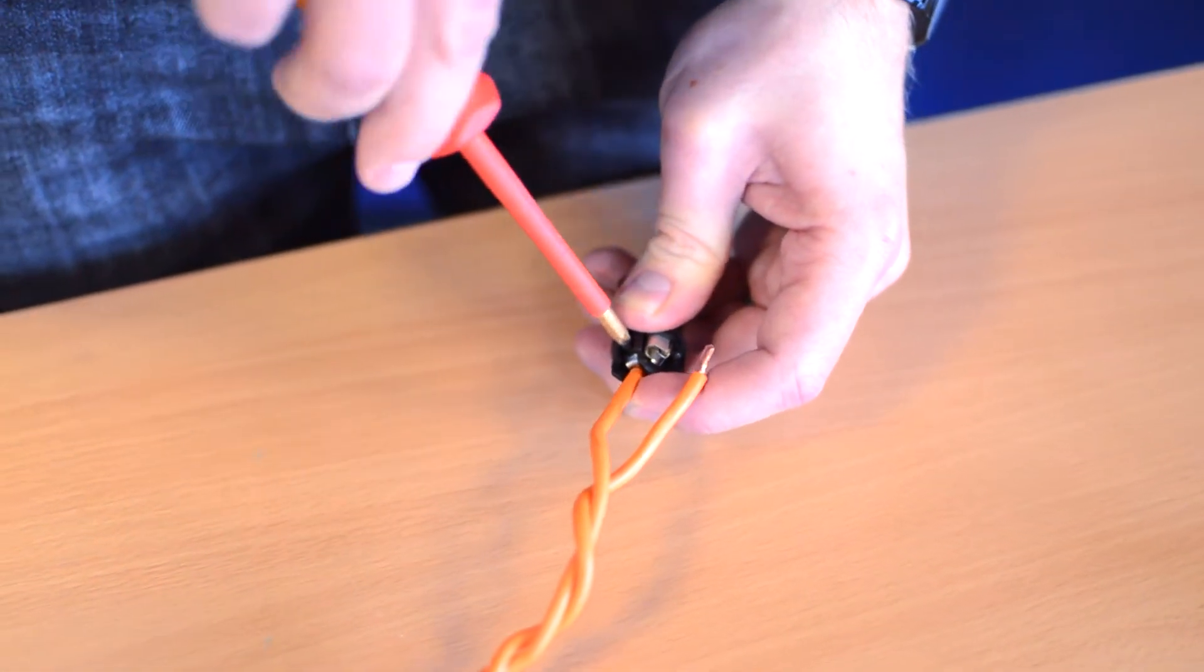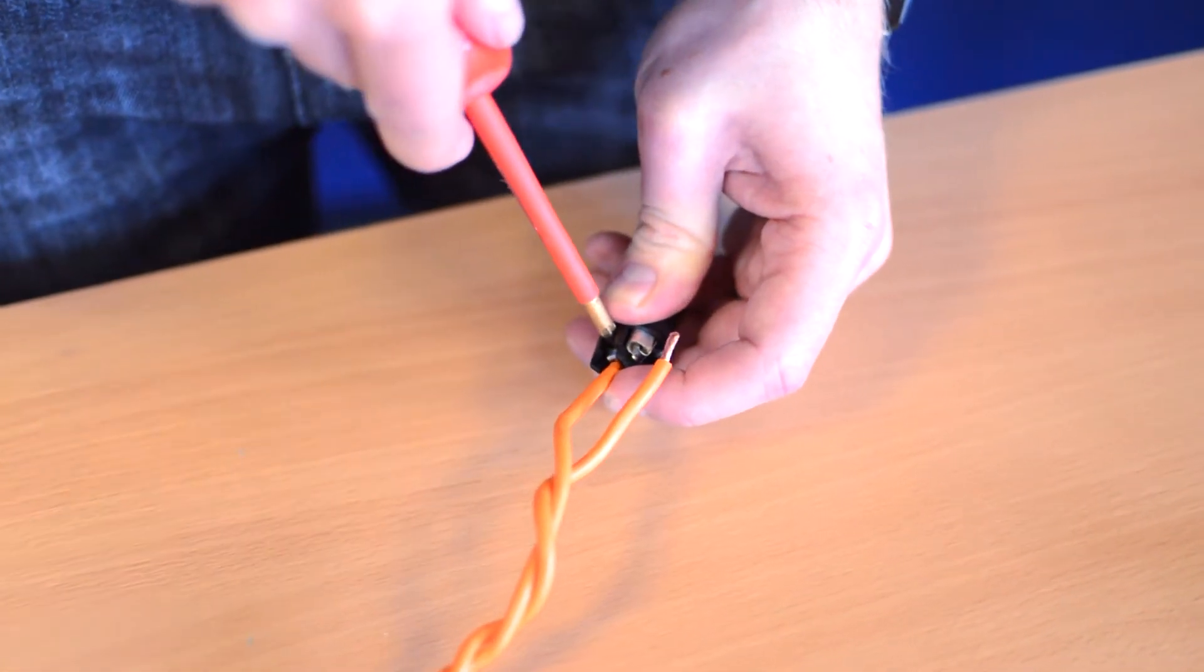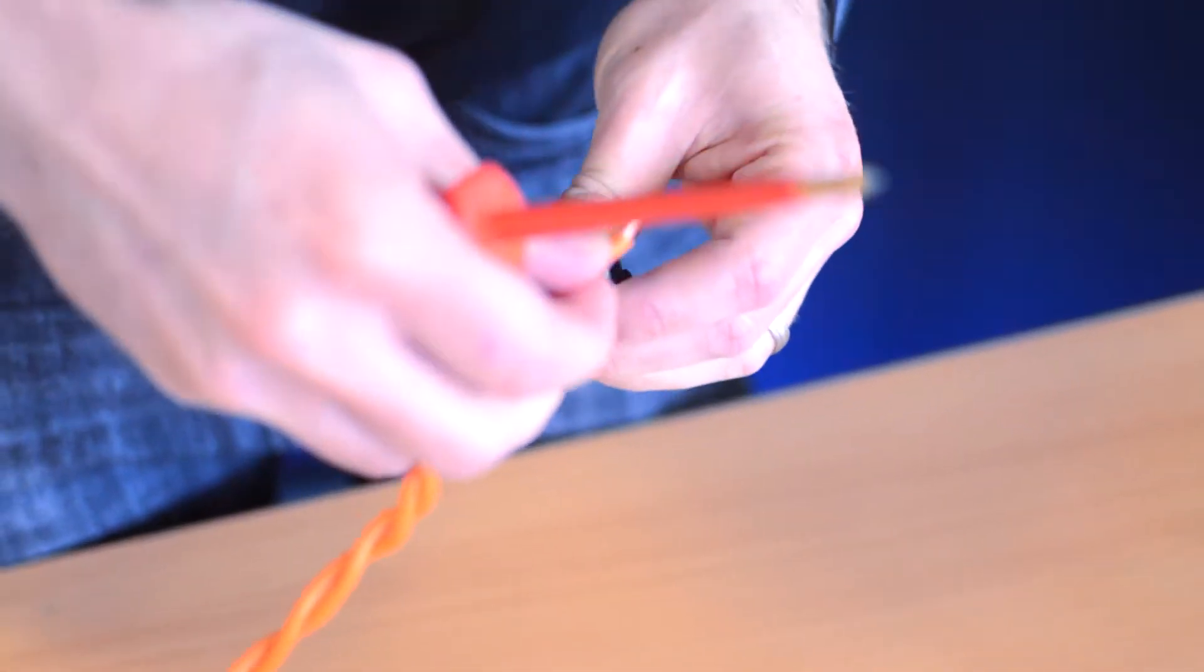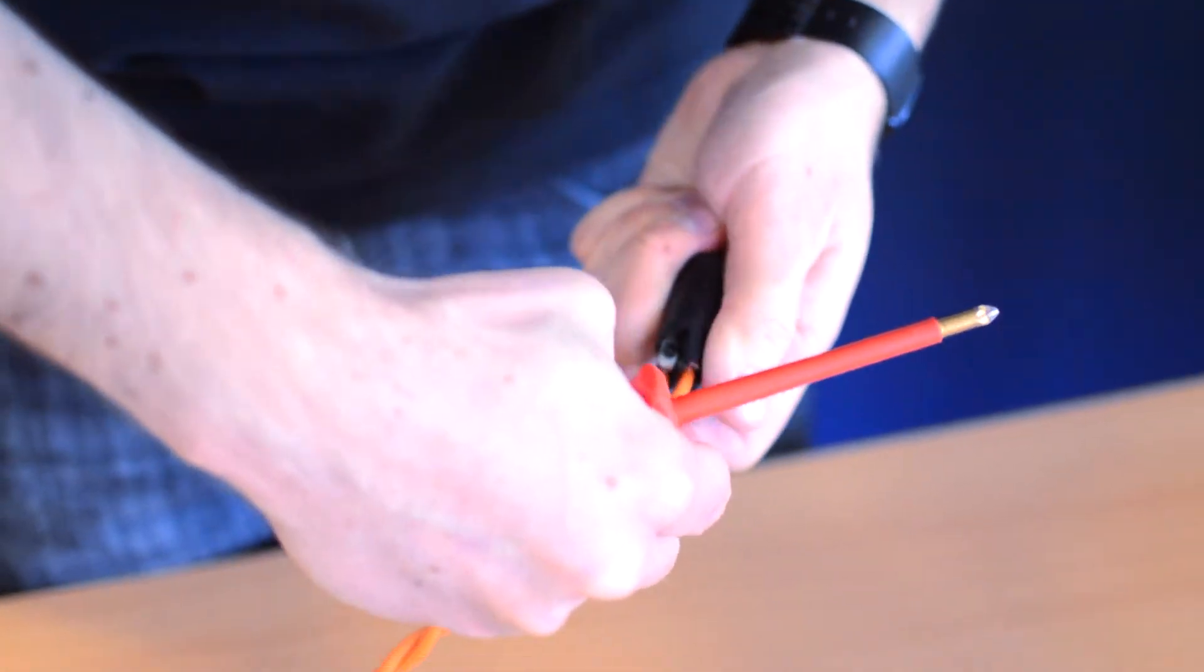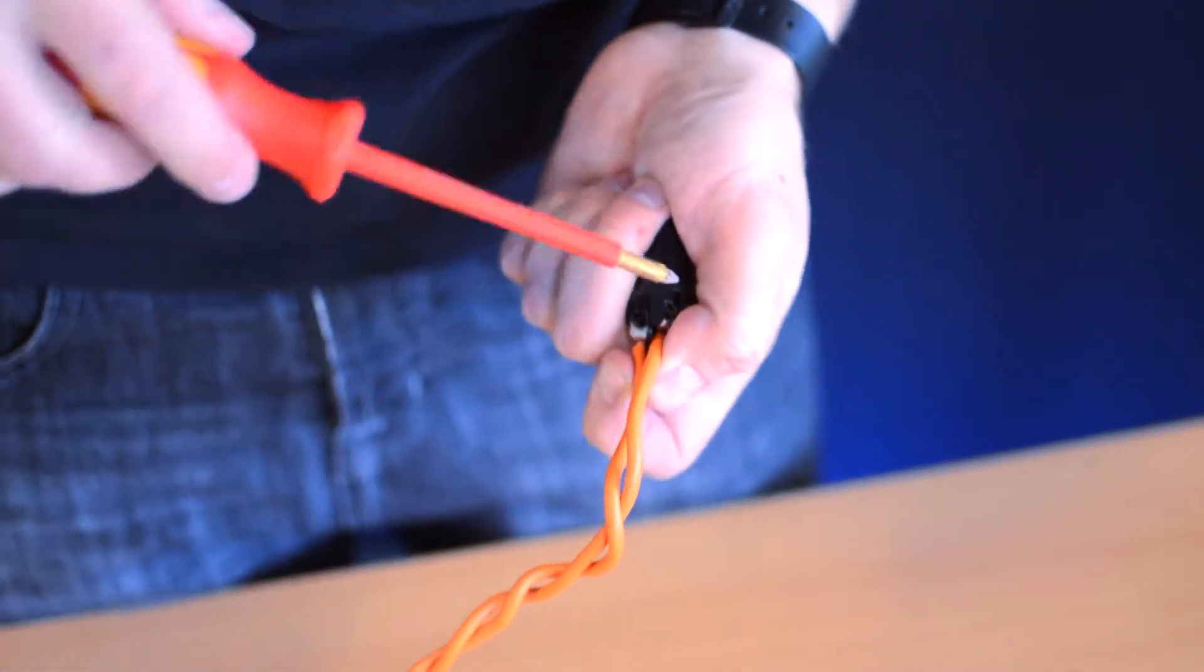I'm going to use a small crosshead screwdriver like a posi two, and then just fit into minus one as well. Hold that end and tighten it up.